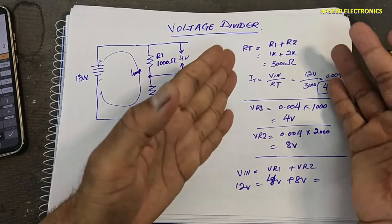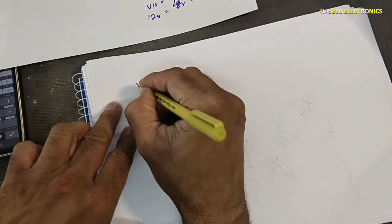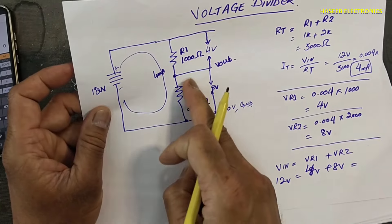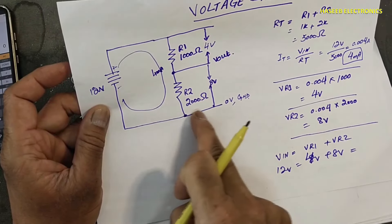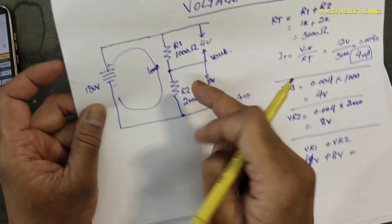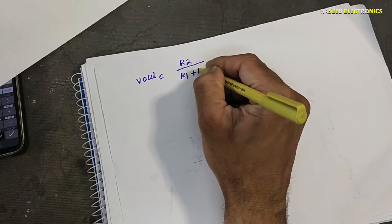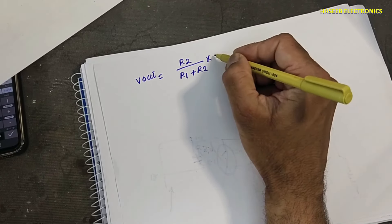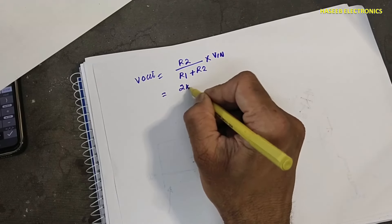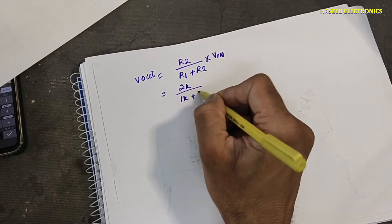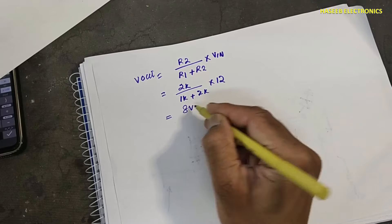Now we use the voltage divider rule. Since we are taking output from the low-side resistor connected to ground, Vout equals R2 divided by (R1 plus R2) multiplied by V_in. With R2 equals 2 kilo-ohm and R1 plus R2 equals 3 kilo-ohm: 2k divided by 3k multiplied by 12 volts equals 8 volts.